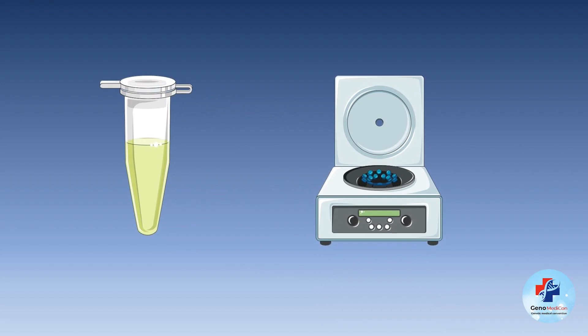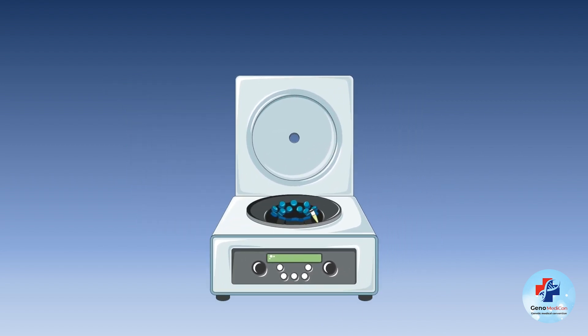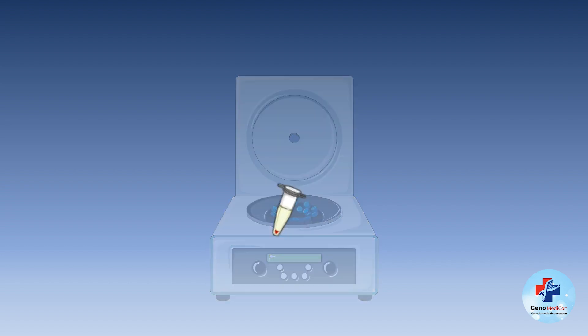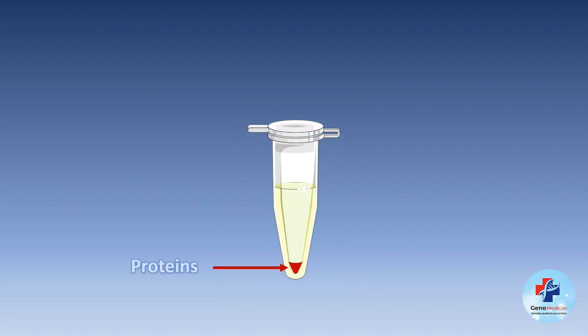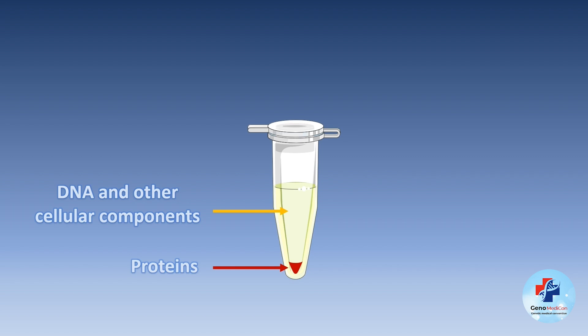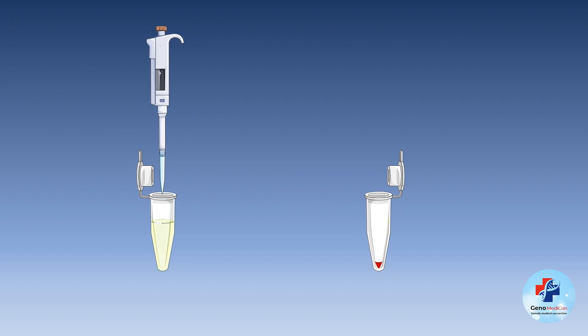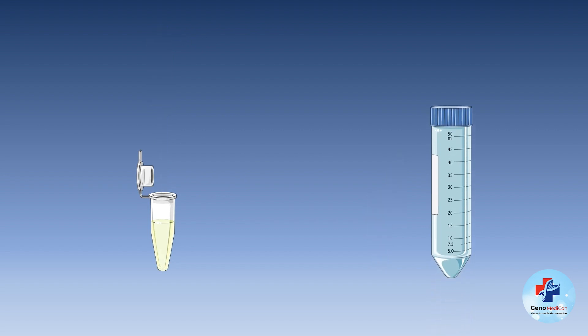Centrifugation separates components based on density. After protein precipitation, the lysate undergoes centrifugation, subjecting the sample to high gravitational forces. This process results in the formation of distinct protein pellets at the bottom of the tube. Simultaneously, the lighter DNA and other cellular components remain in the supernatant. The separation achieved here is crucial for isolating DNA from contaminants and proteins. Following centrifugation, the supernatant enriched with DNA is transferred into a new tube to undergo precipitation.